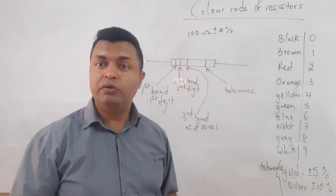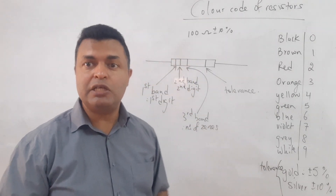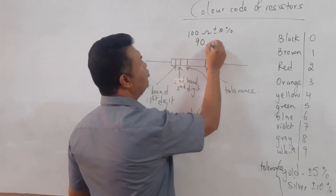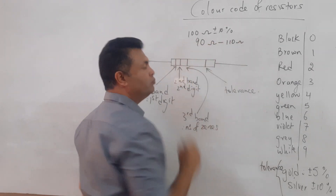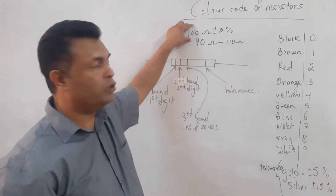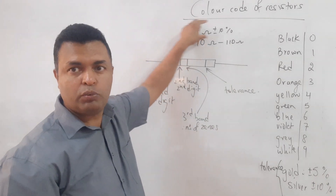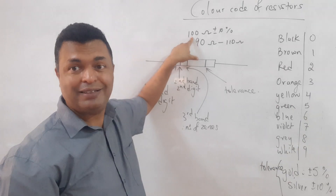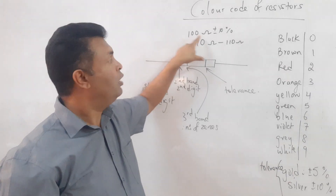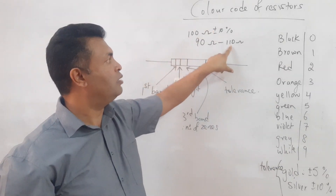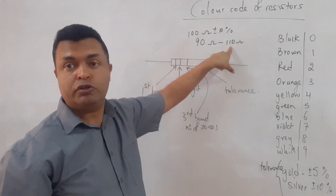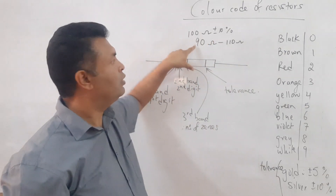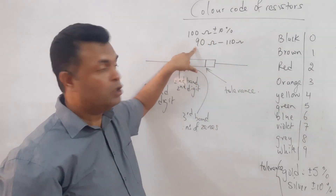So the value of the resistance can vary between 90 ohms and 110 ohms. It is nominally 100 ohms, but with a tolerance of 10%, adding 10 ohms gives 110 ohms and subtracting 10 ohms gives 90 ohms.